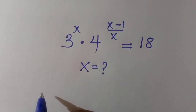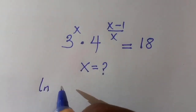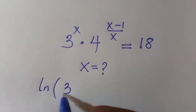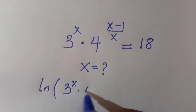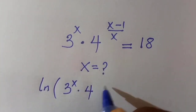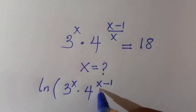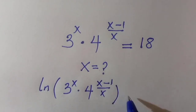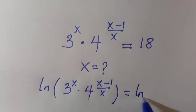We start by introducing logarithm to both sides, which is the natural log. And we have ln of 2 to the power x, multiplied by 4 to the power of (x minus 1) divided by x, equals ln of the right-hand side.